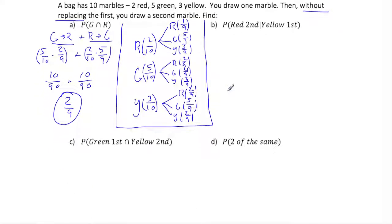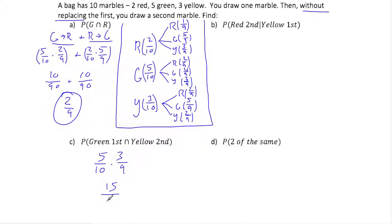I'm going to skip B for now because if you look at C, it's similar to A except it specifies the order. This is saying the probability I get green first and yellow second. The probability I get green first is 5 out of 10, and I multiply that by the probability I get yellow second, which is 3 over 9. I multiply these together to get 15/90, which is the same as 1/6.